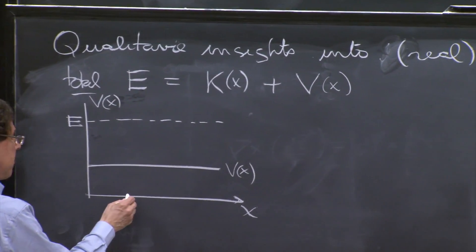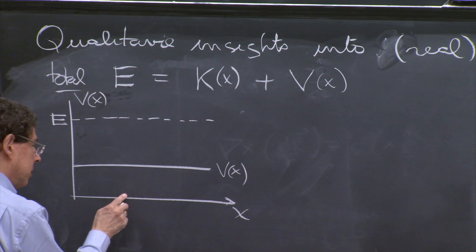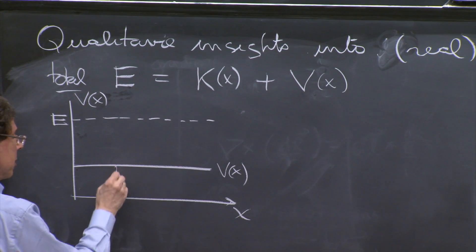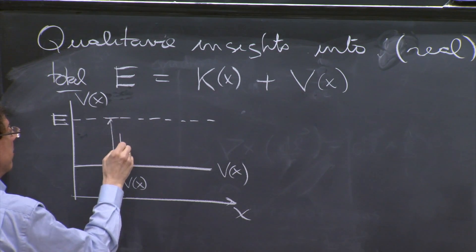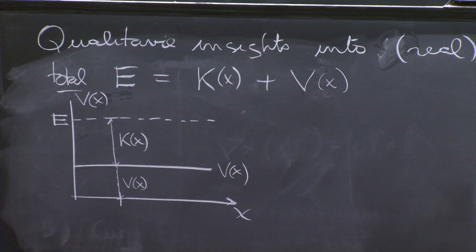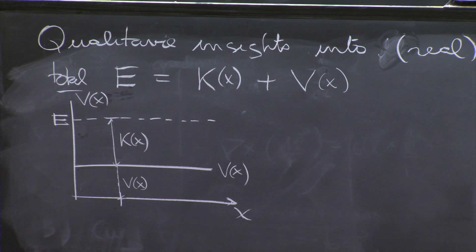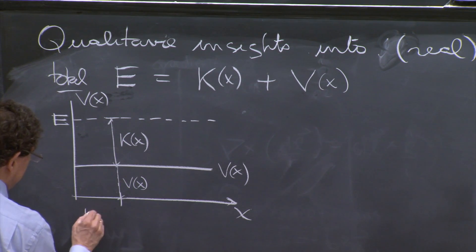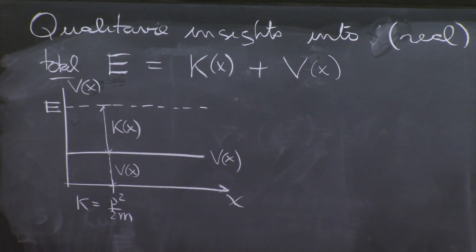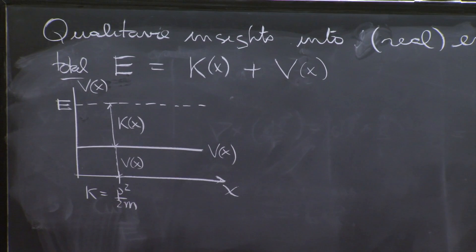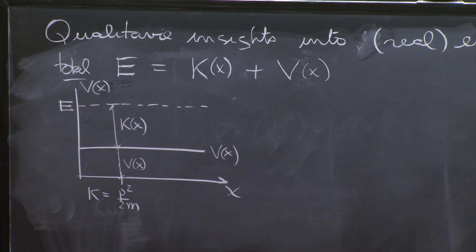And then wherever you move, if the particle, the classical particle is here, then it has some potential energy, V of x, and some kinetic energy, k of x, building up the total energy. So classically, the kinetic energy determines a momentum. The kinetic energy is p squared over 2m. Now, the kinetic energy is p squared over 2m. In this case, the kinetic energy is a constant. The momentum will be a constant.